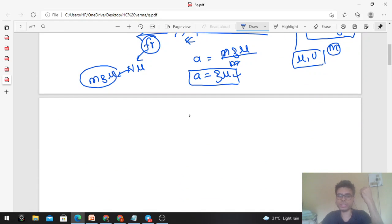If u and μ are same, then minimum stopping distance will be same for both the cars.